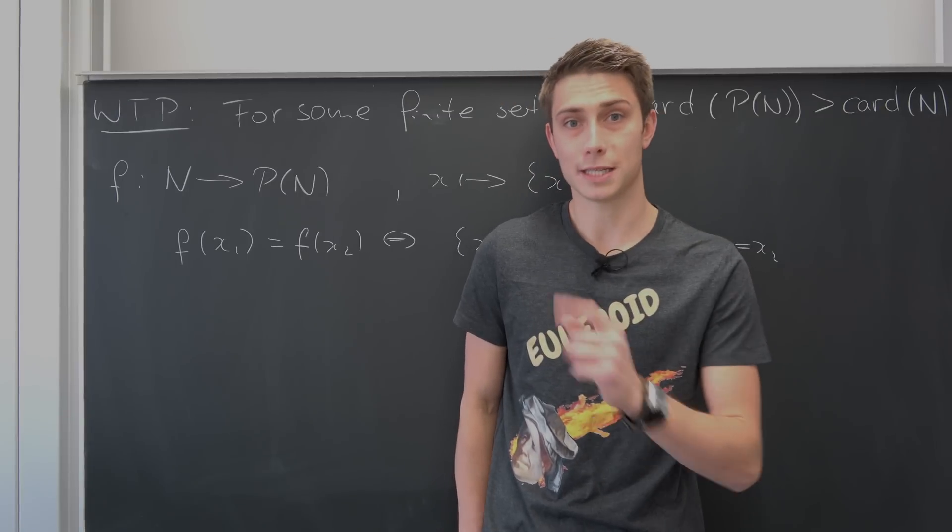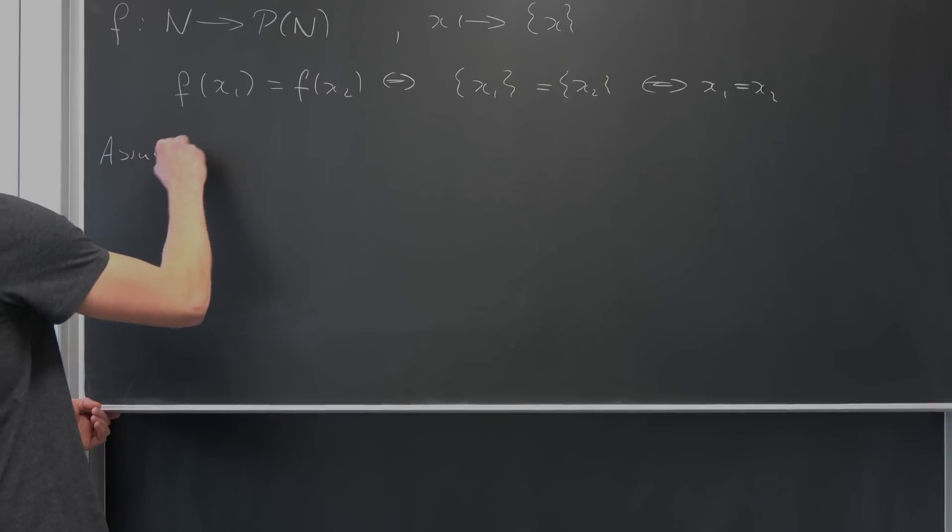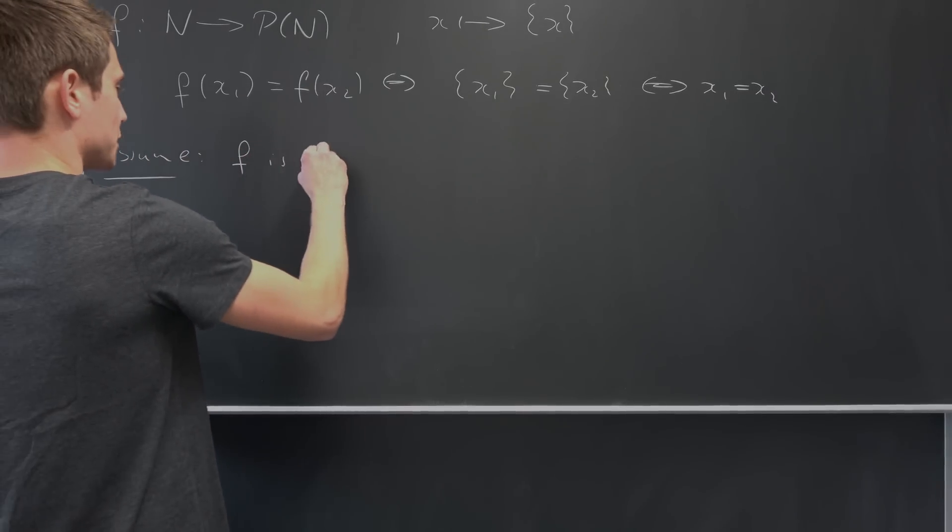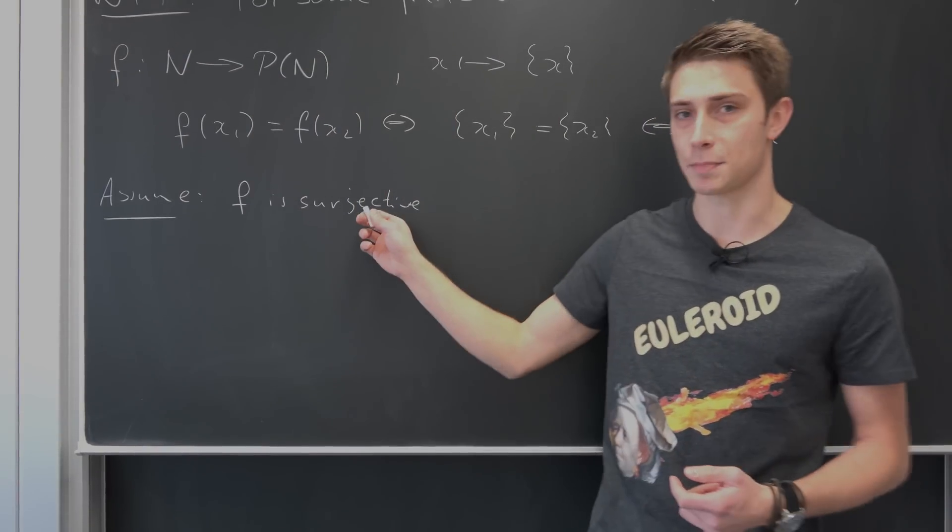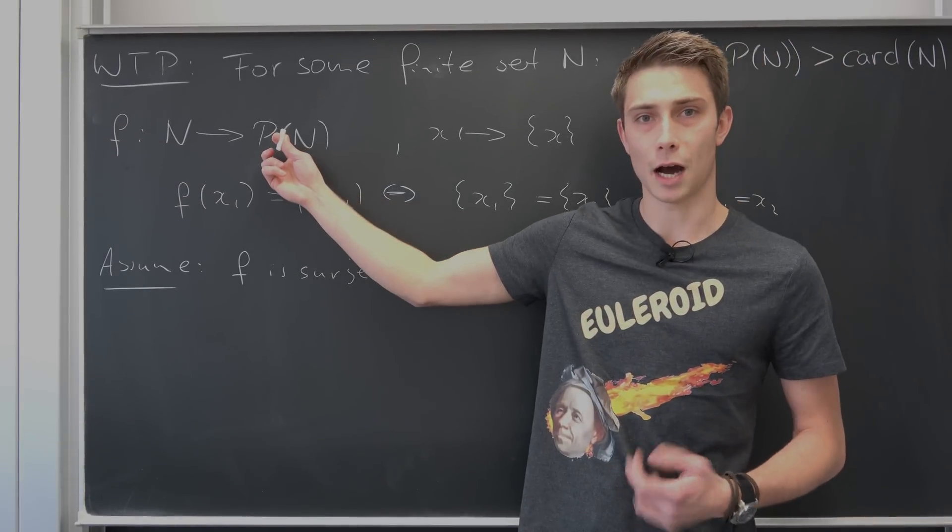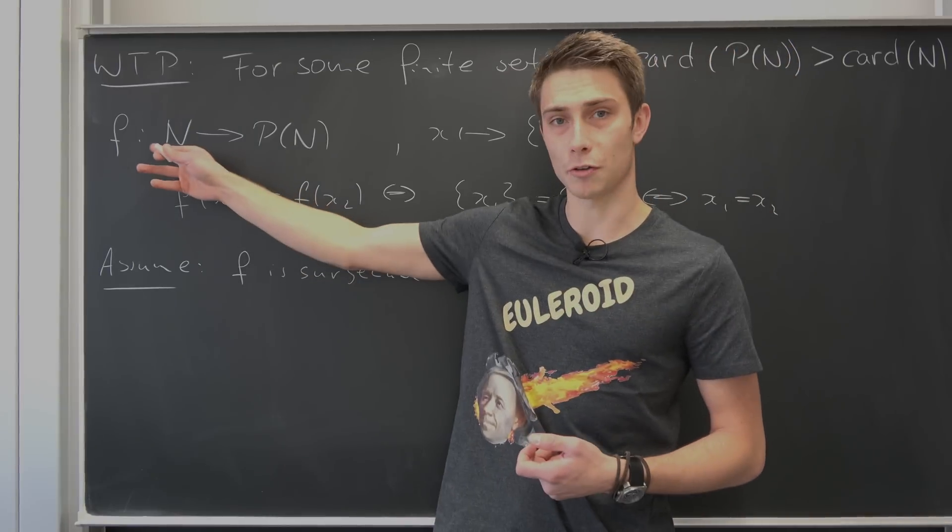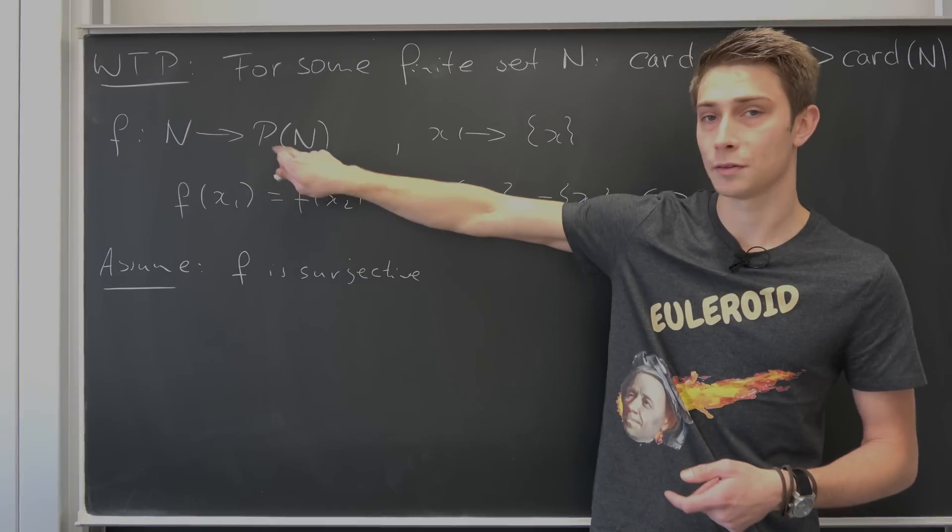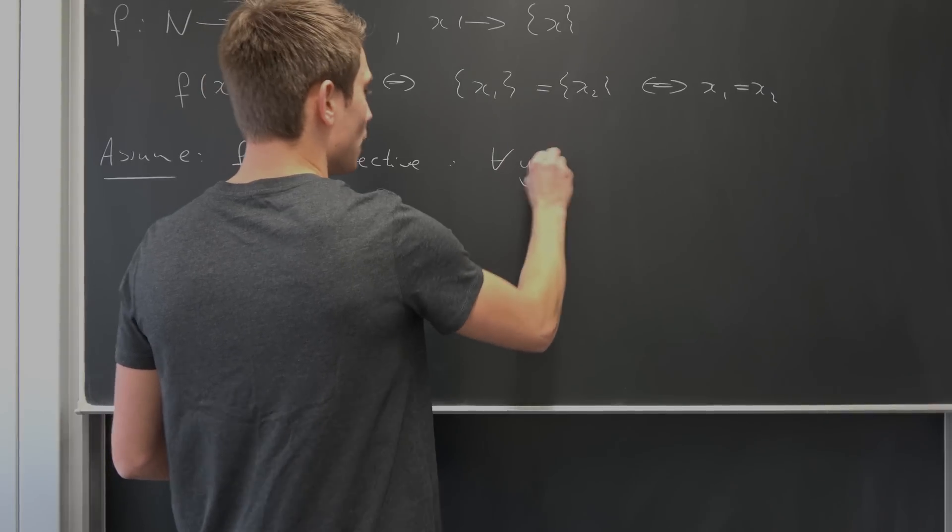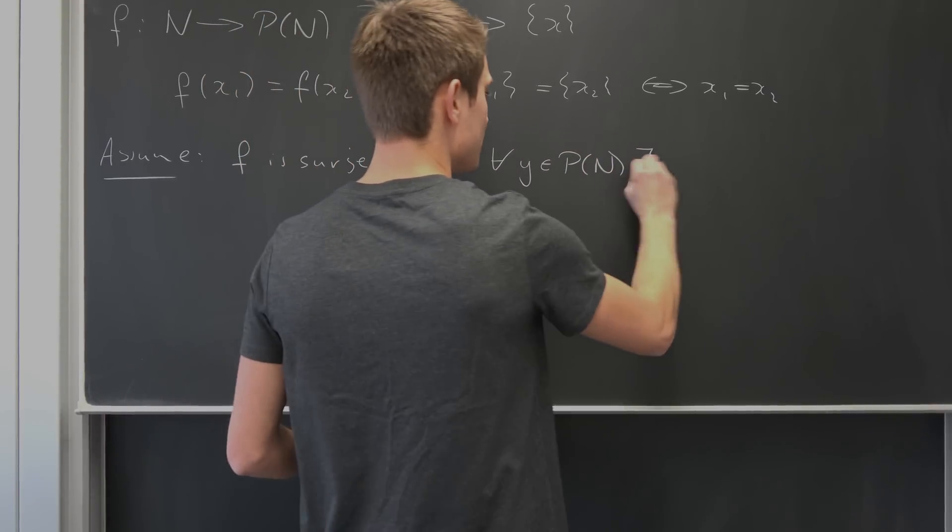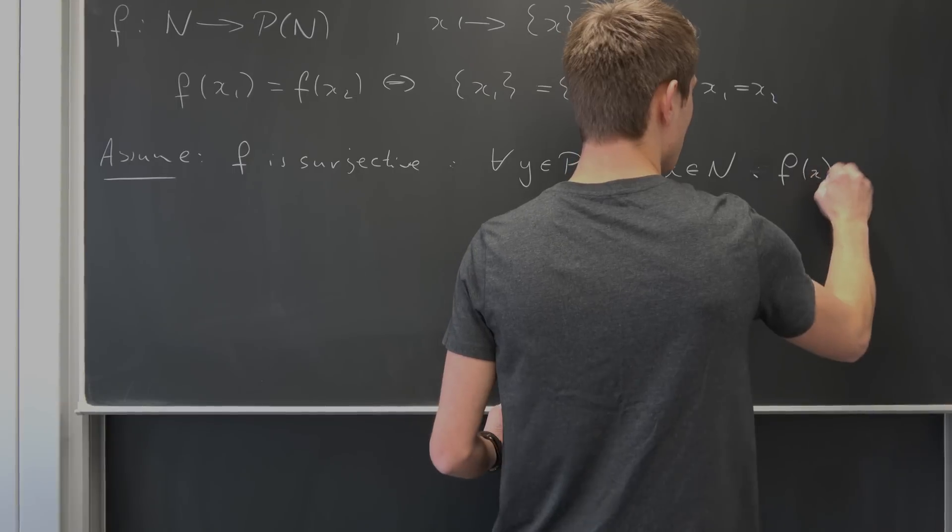At the moment we are going to assume that there is indeed a surjection of f. So assume f is surjective. But what does surjective actually mean? Well it just means that for all elements out of this power set we can find some element in the set such that the image of this element in the set n is exactly in the power set. Meaning formally that for all y element of the power set of n there is some x element of n such that we have f of x being equal to y.